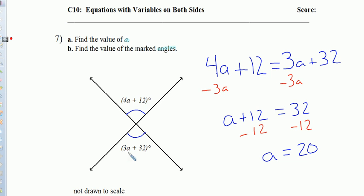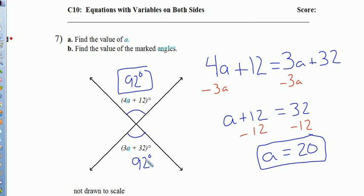If a is 20, then I should be able to plug 20 in for a in either of these, actually both of these angles, and get the same value. 3 times 20 would be 60 plus 32 is 92. So we're looking at 92 degrees. And here, 4 times 20 is 80 plus 12 is also 92 degrees. So I just need to make sure I show my answers. I got 92 degrees for part b, and I got a equals 20 for part a, and we're good. Final answer.